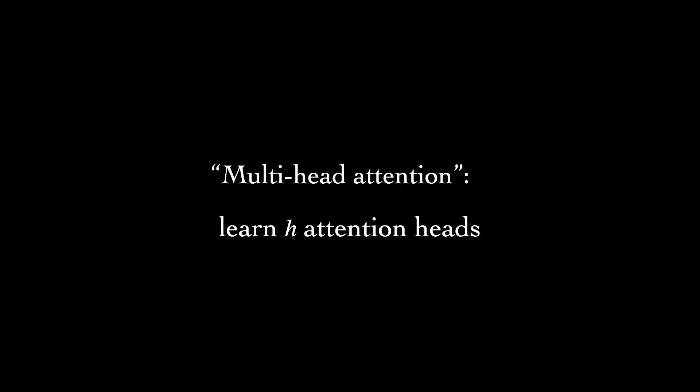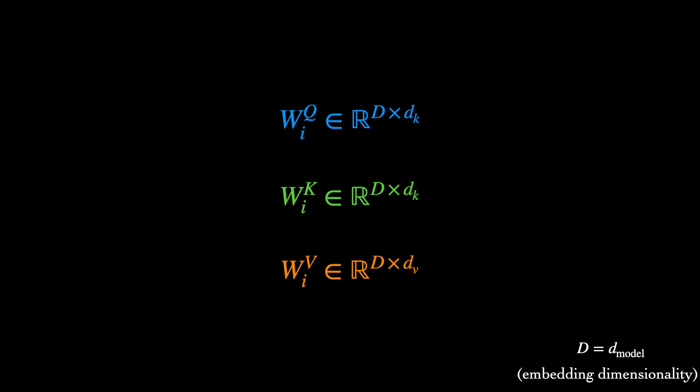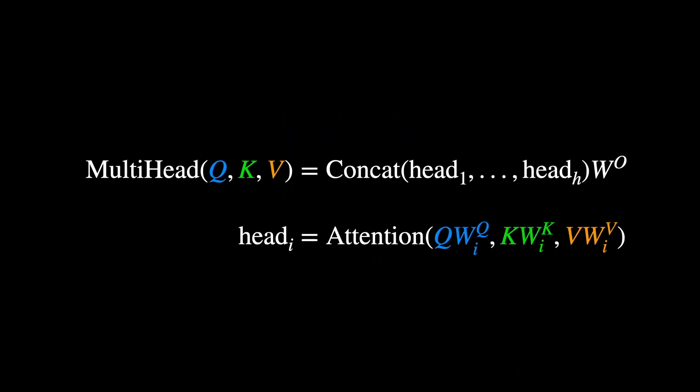To alleviate this, the authors propose using multiple attention heads that can learn different representations simultaneously. For H attention heads, we'll have H sets of learned projection matrices, W_Q, W_K, and W_V, where i indexes over the heads. These matrices will project each of the word representations to H different query, key, and value vectors. The queries and keys have equal dimensionality dk due to the dot product. In practice, the value dimensionality dv is often set to be equal to dk. The overall multi-head attention block computes the original attention function H times, where Q, K, and V are all identical—just the stacked word representations at a given layer.